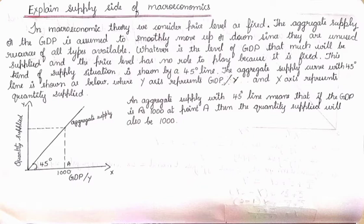Okay, now from today onwards we will focus on your examinations. As you all know, I think the last video was on Chapter 4 — determination of income and employment. So, only 4 marks in one question and 6 marks in another. Now the next question is: explain the supply side of macroeconomics. Notes also I am displaying here, so that it is convenient for you to write for the examinations and you get an explanation as well. Now, the supply side of macroeconomics — this is a 6-mark question from macroeconomics, Chapter 4.